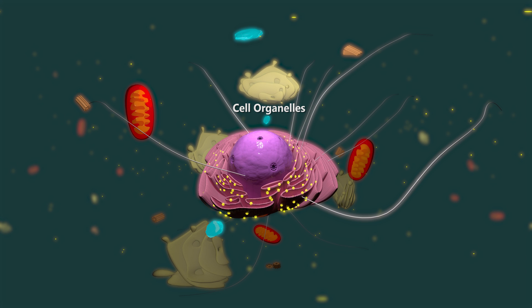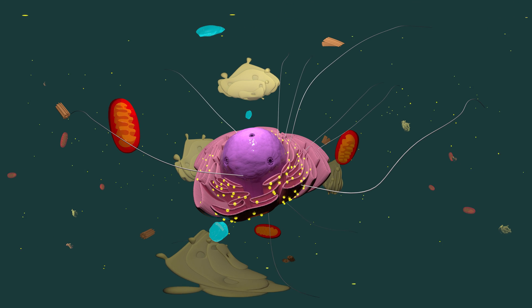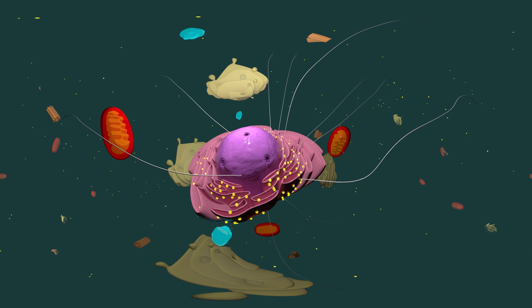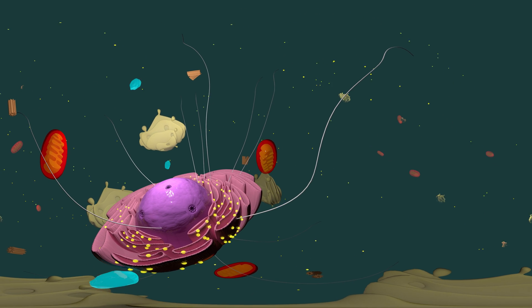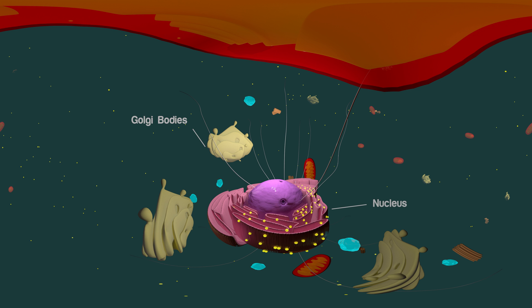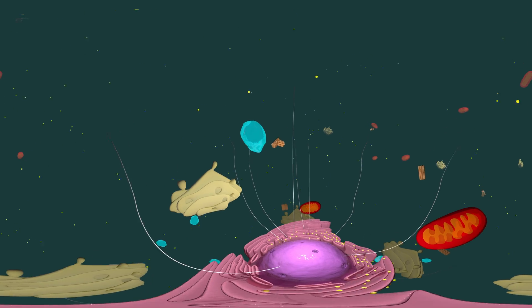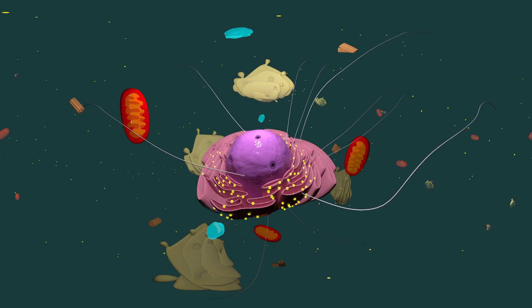What are cell organelles? 'Organelle' means little organ. Organelles are the specialized components of a cell which have unique functions to perform. Let's start with the cytoplasm, which is a jelly-like fluid. It contains all the other cell organelles like endoplasmic reticulum, mitochondria, Golgi bodies, nucleus, and more.